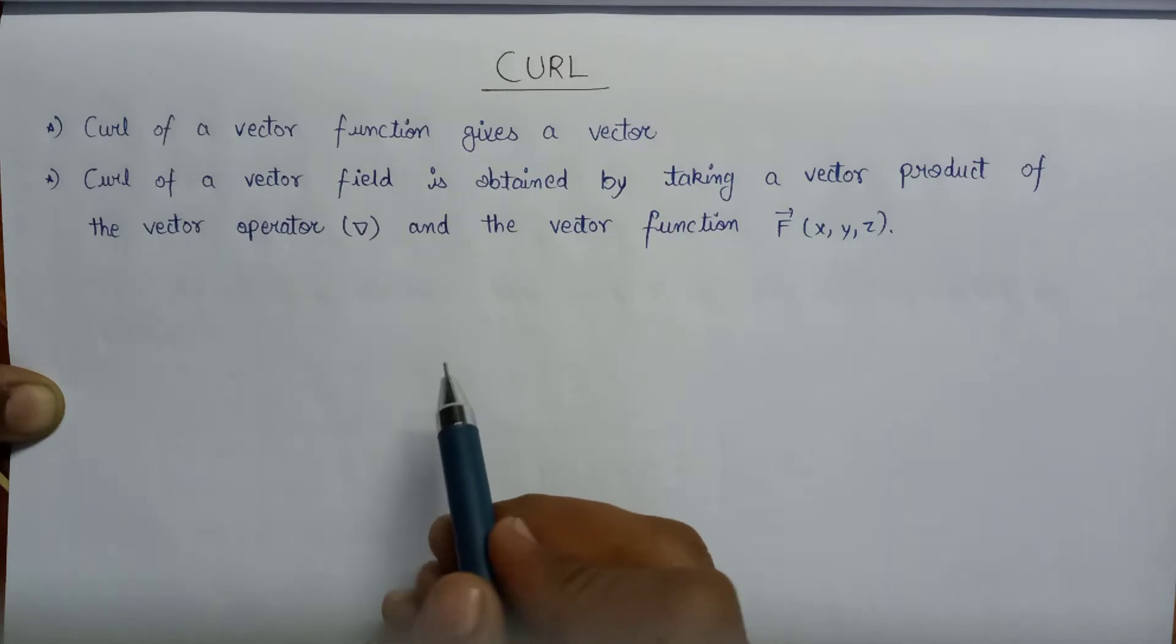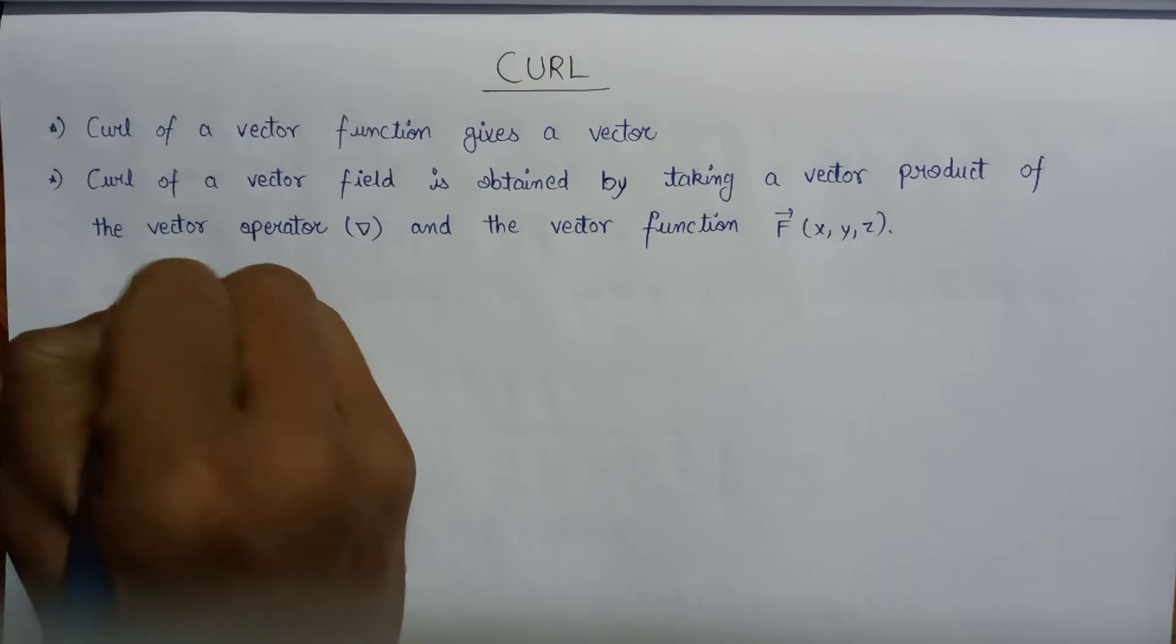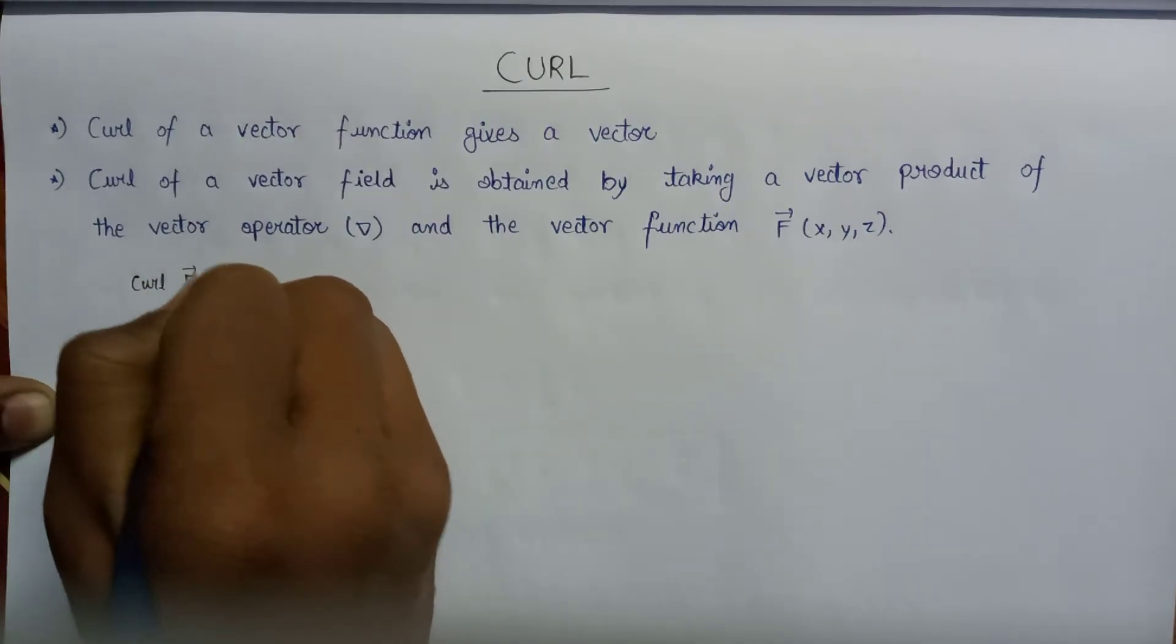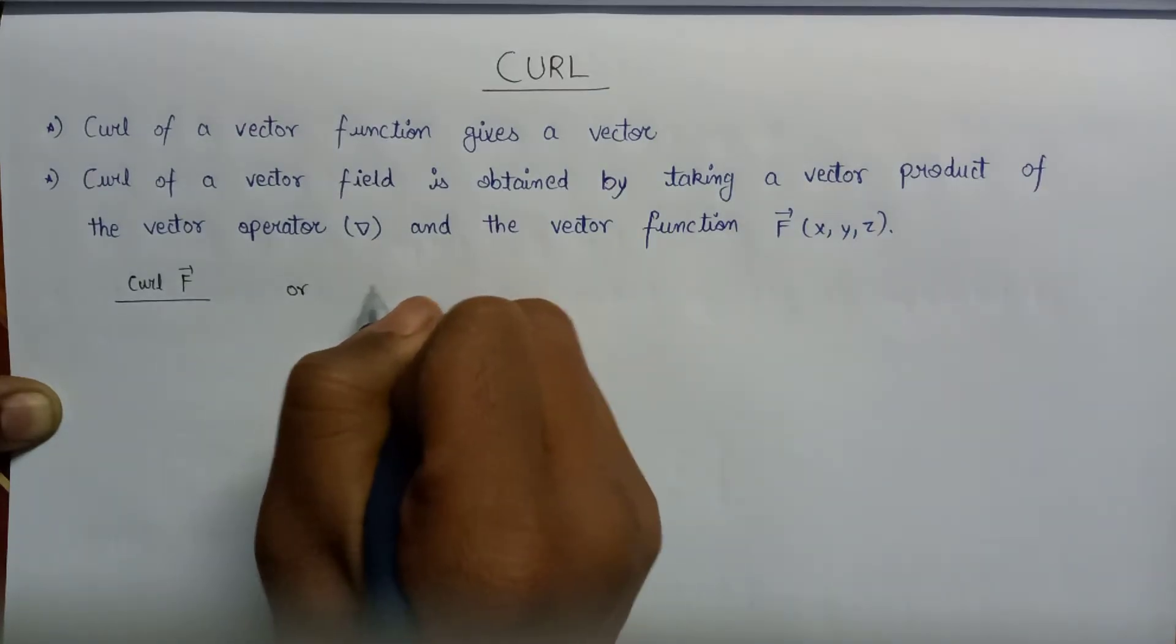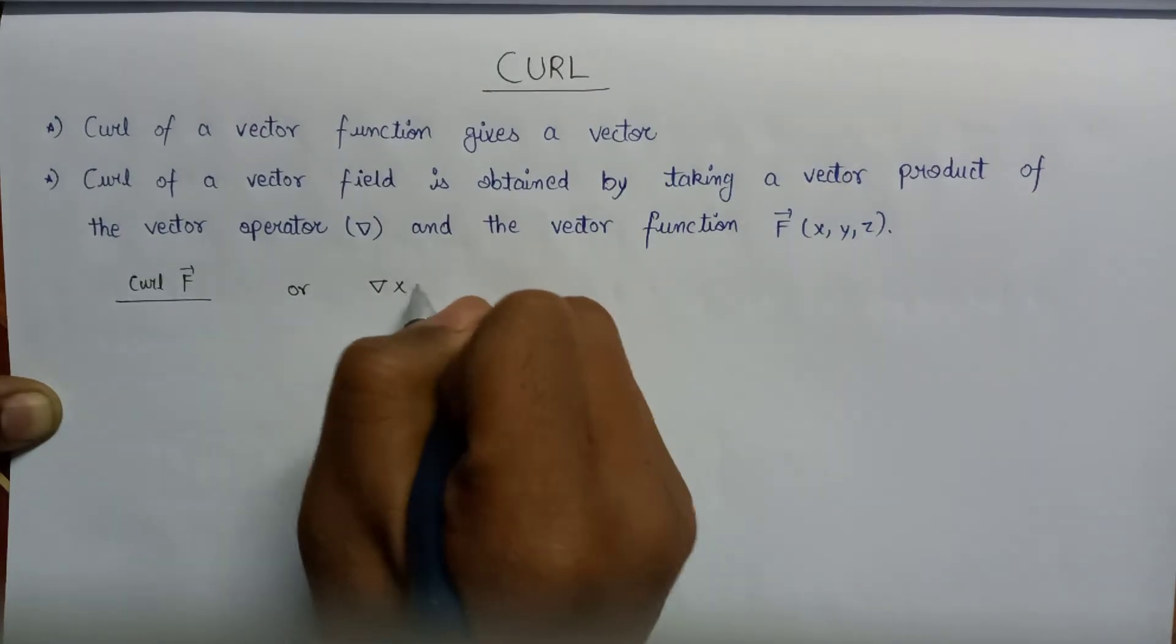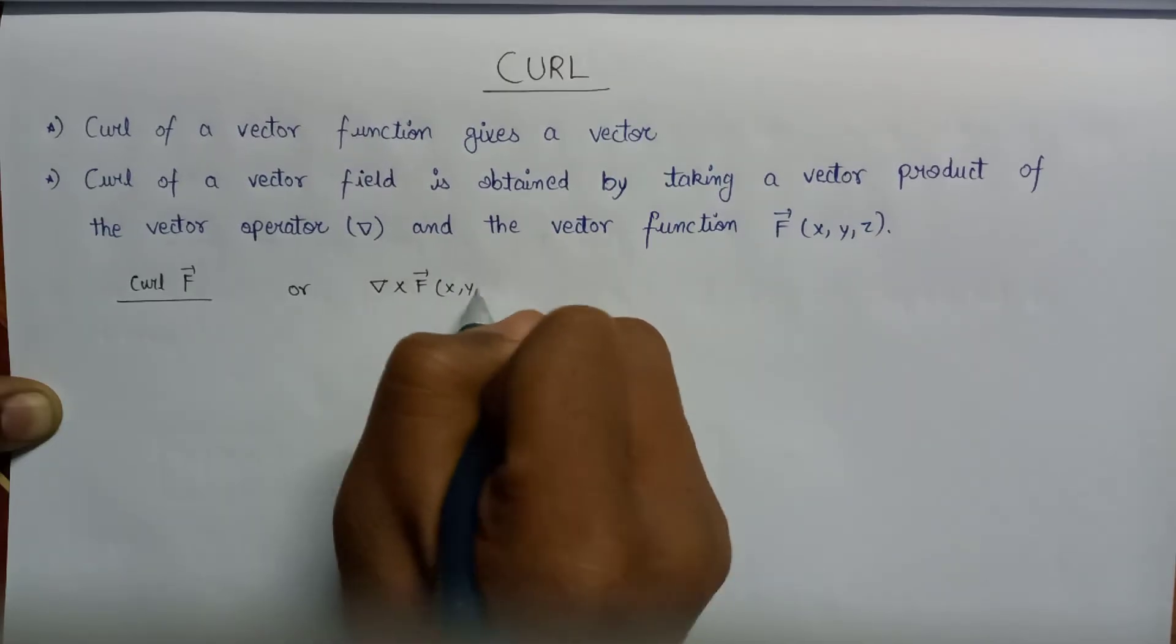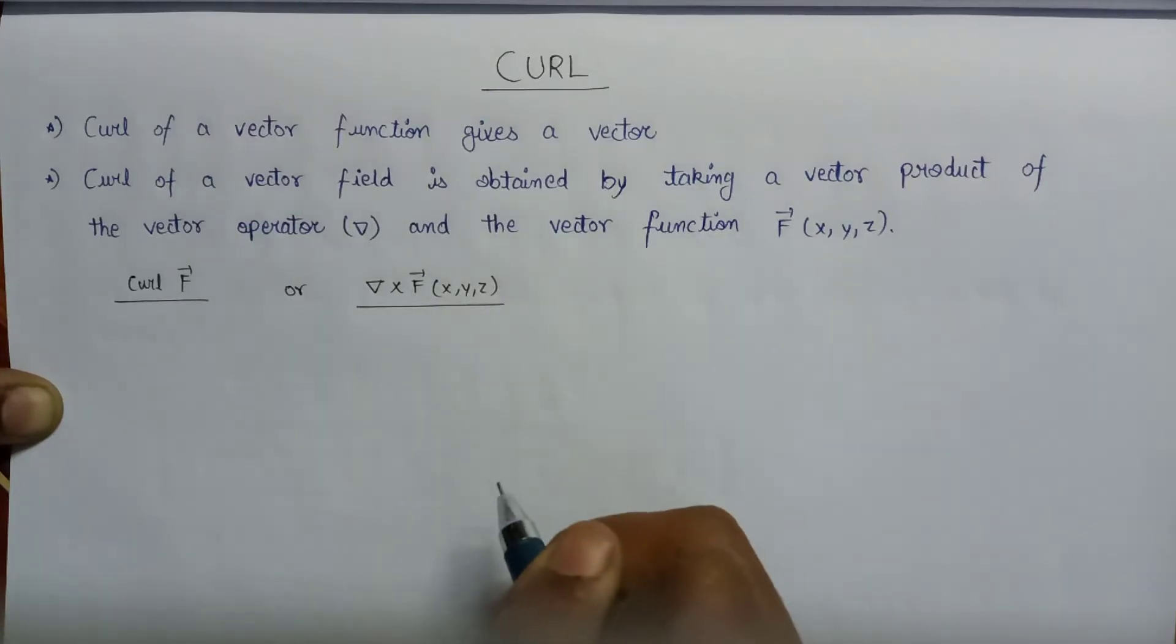Now the curl of a vector can be represented as either curl of f vector or it can also be represented as del cross f vector of x, y, z. These are the two representations of the curl of a vector function.